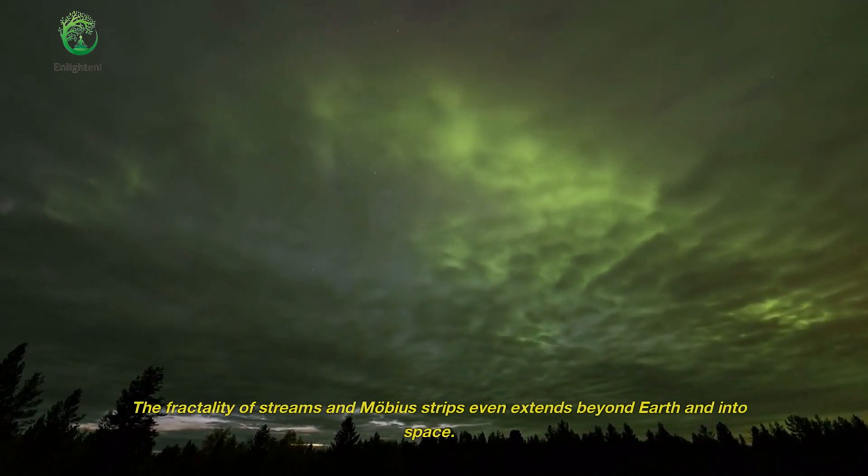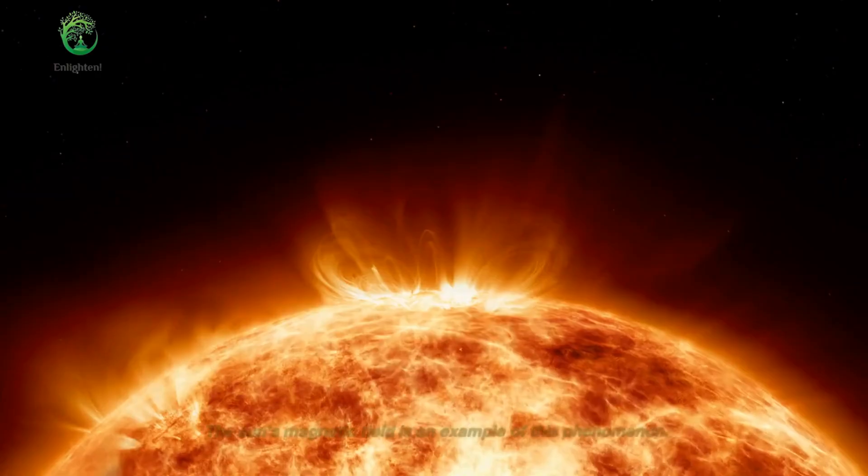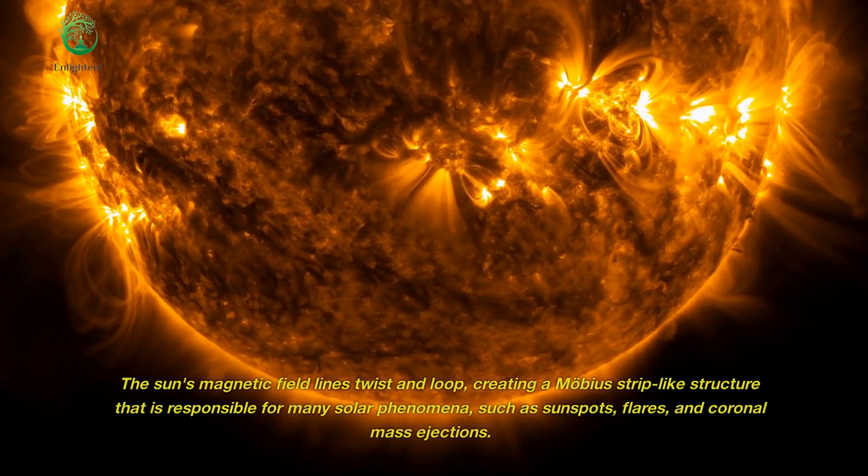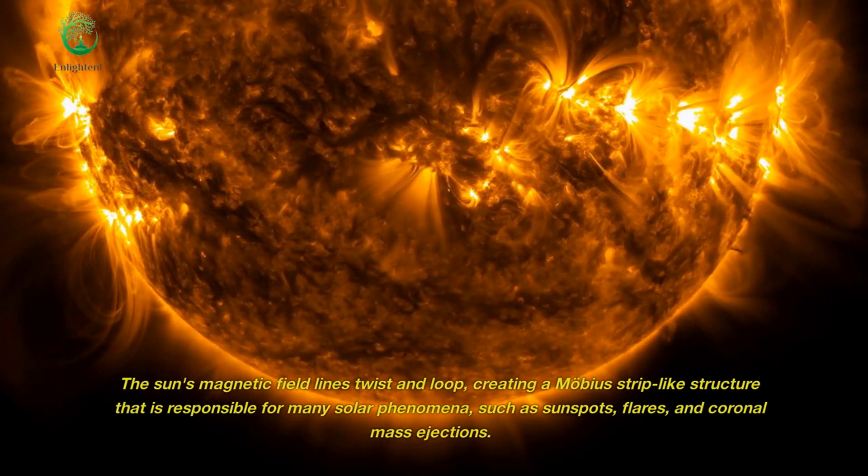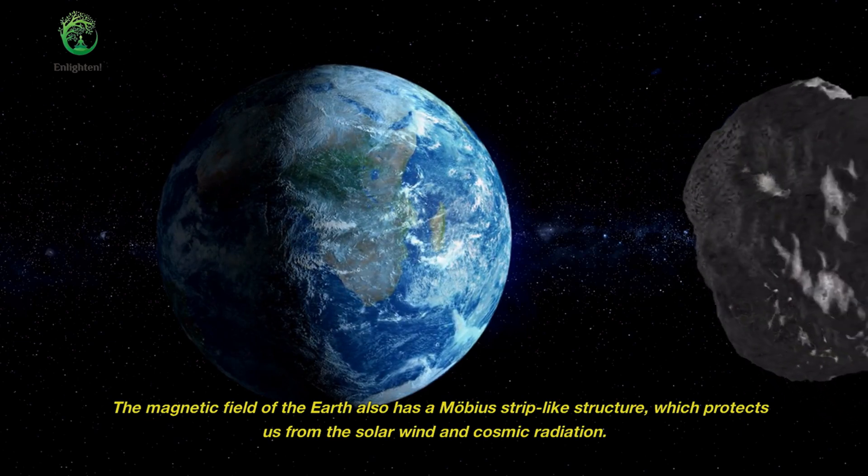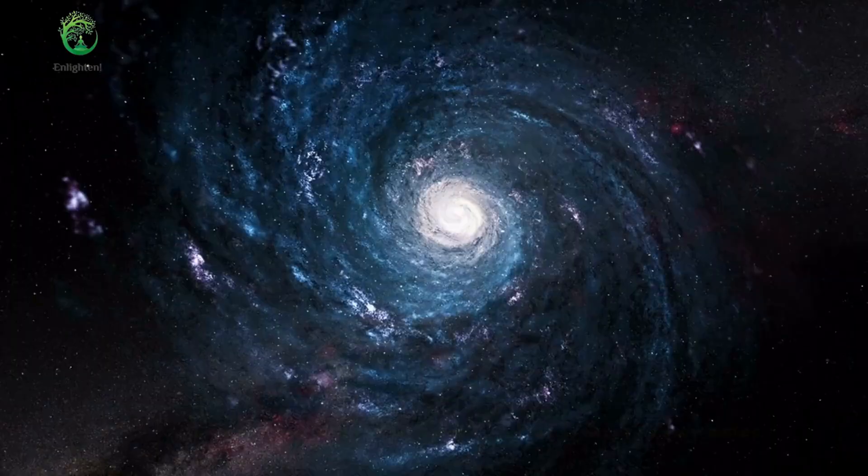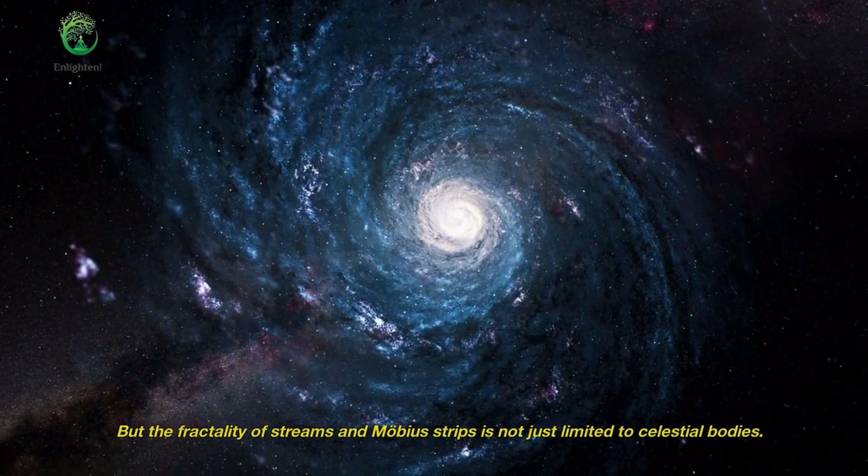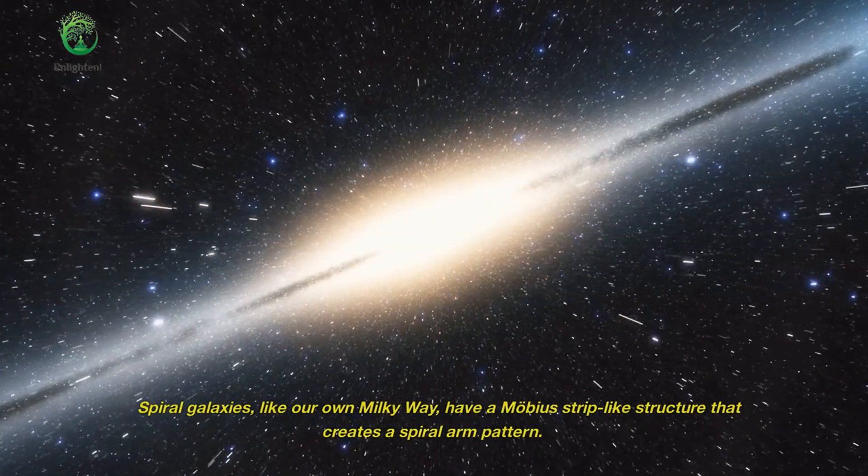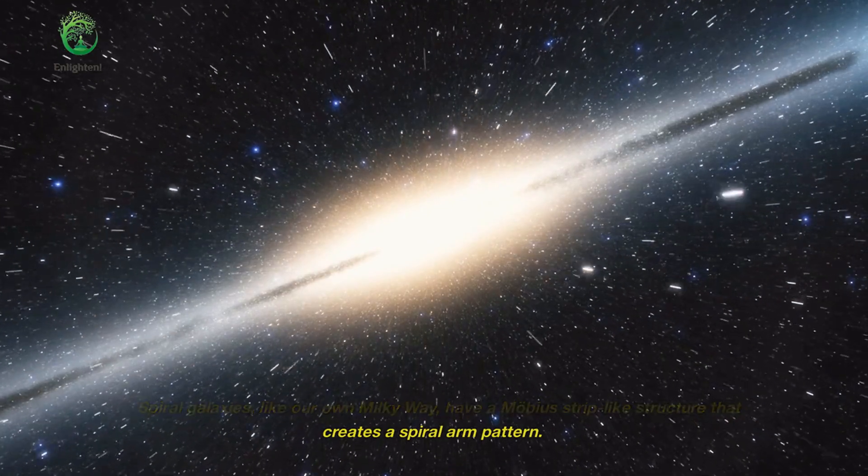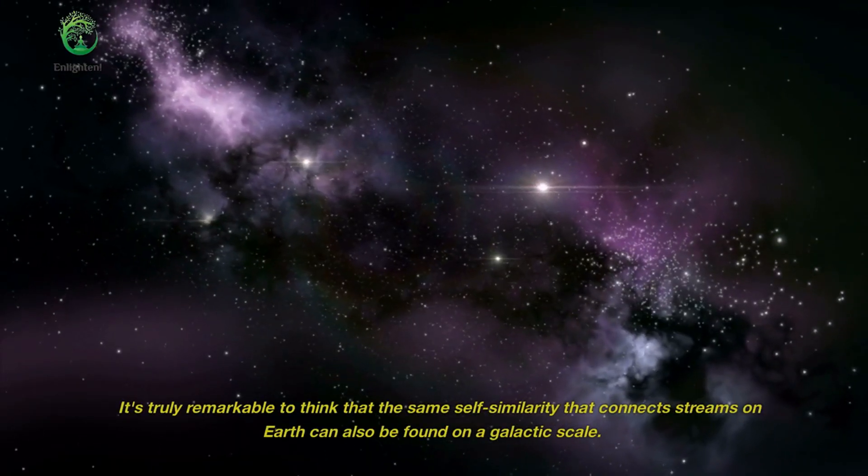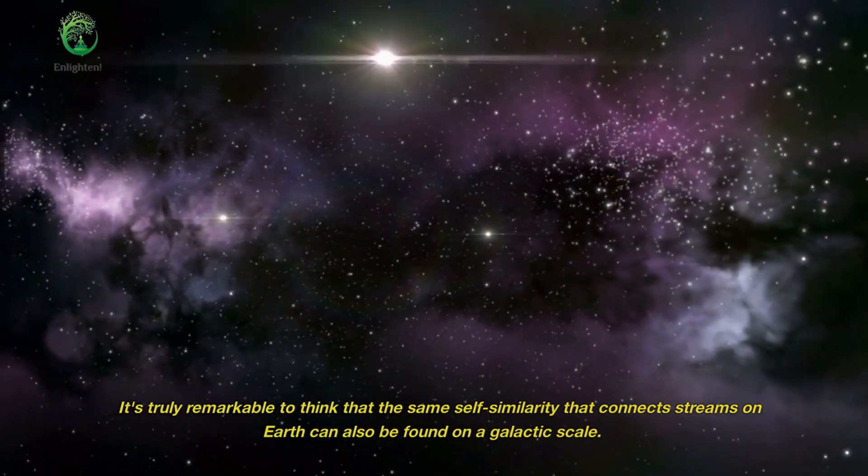The fractality of streams and Mobius strips even extends beyond Earth and into space. The Sun's magnetic field is an example of this phenomenon. The Sun's magnetic field lines twist and loop, creating a Mobius strip-like structure that is responsible for many solar phenomena, such as sunspots, flares, and coronal mass ejections. The magnetic field of the Earth also has a Mobius strip-like structure, which protects us from the solar wind and cosmic radiation. But the fractality of streams and Mobius strips is not just limited to celestial bodies. It can also be found in the structure of galaxies. Spiral galaxies, like our own Milky Way, have a Mobius strip-like structure that creates a spiral arm pattern. This pattern is formed by the movement of stars and gas as they rotate around the galaxy's center. It's truly remarkable to think that the same self-similarity that connects streams on Earth can also be found on a galactic scale.